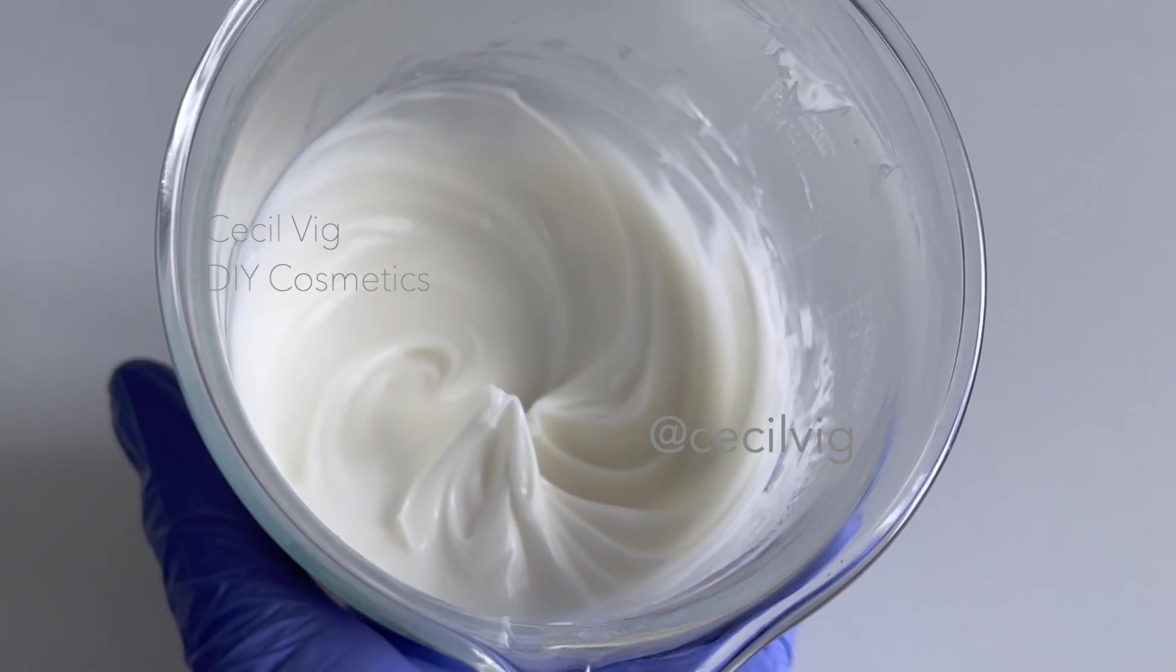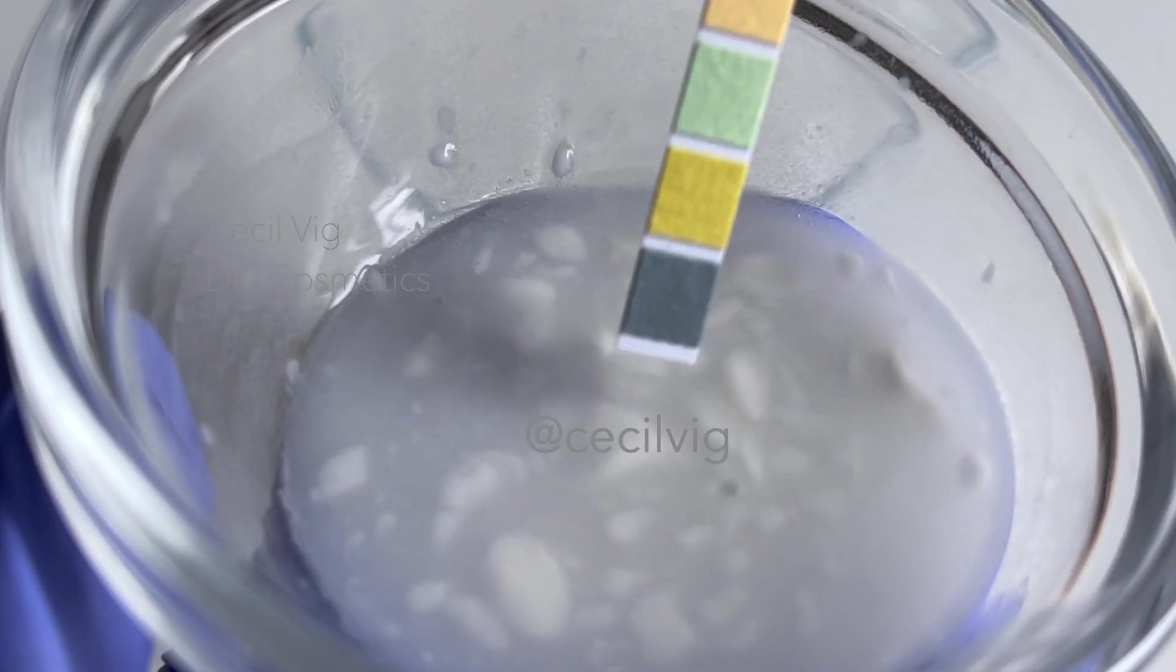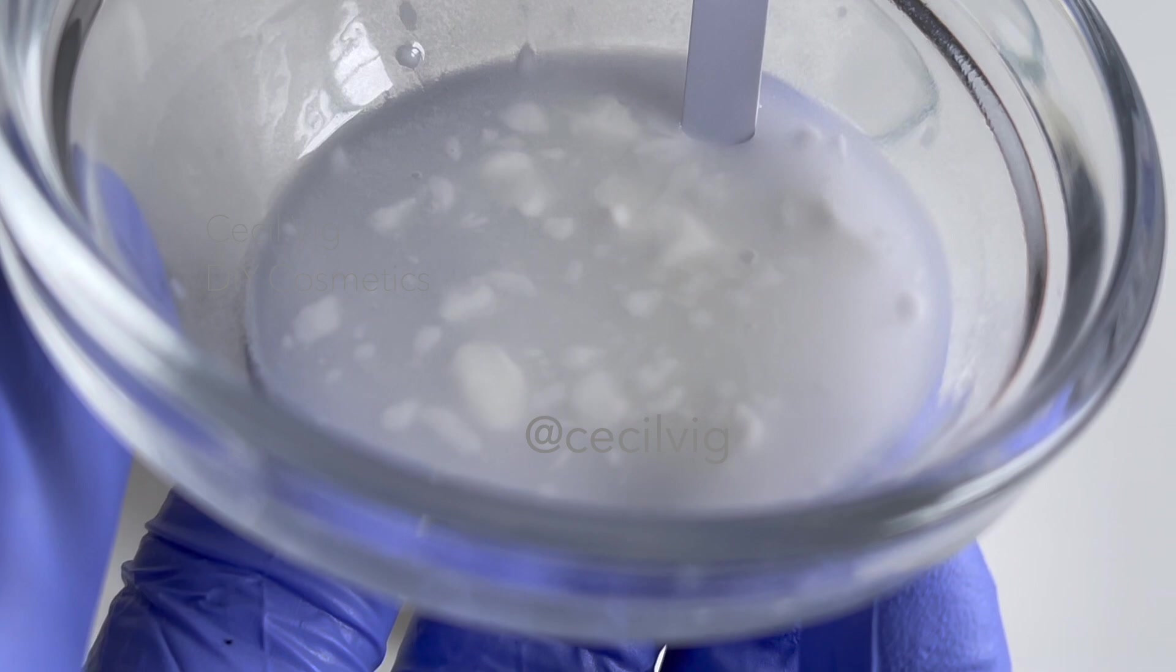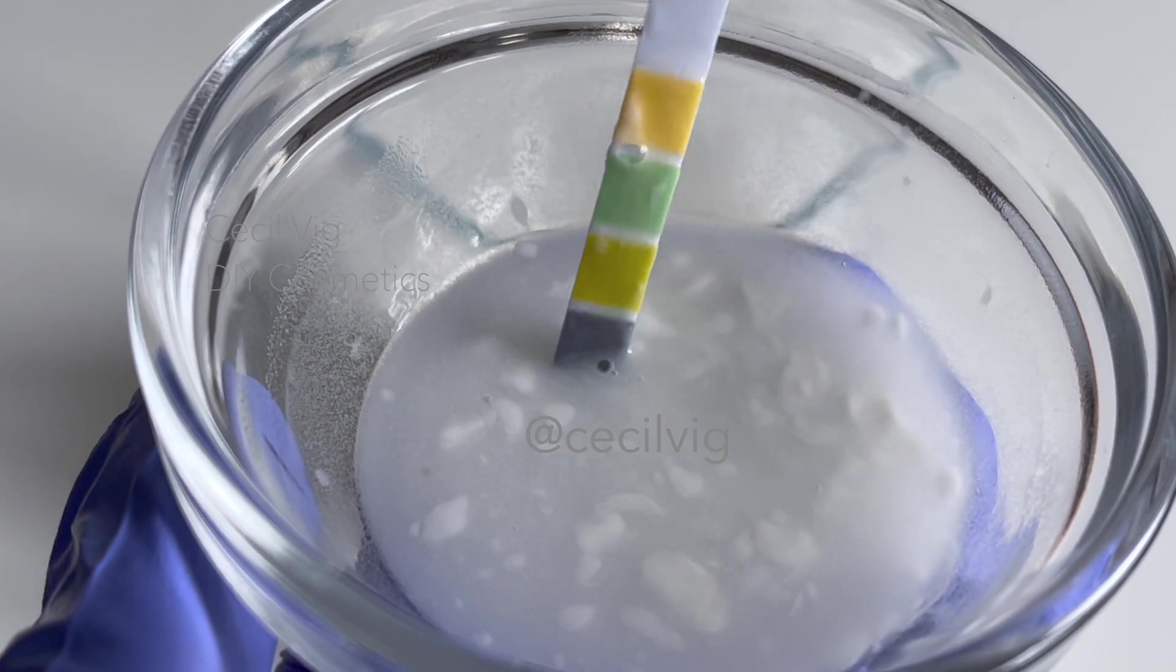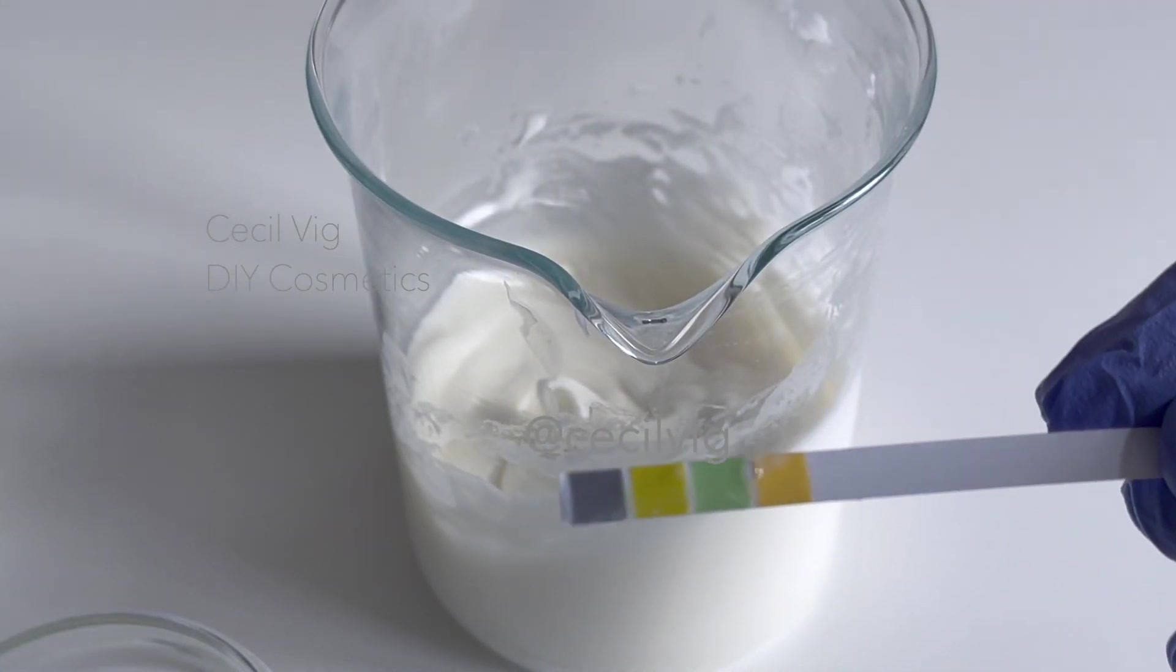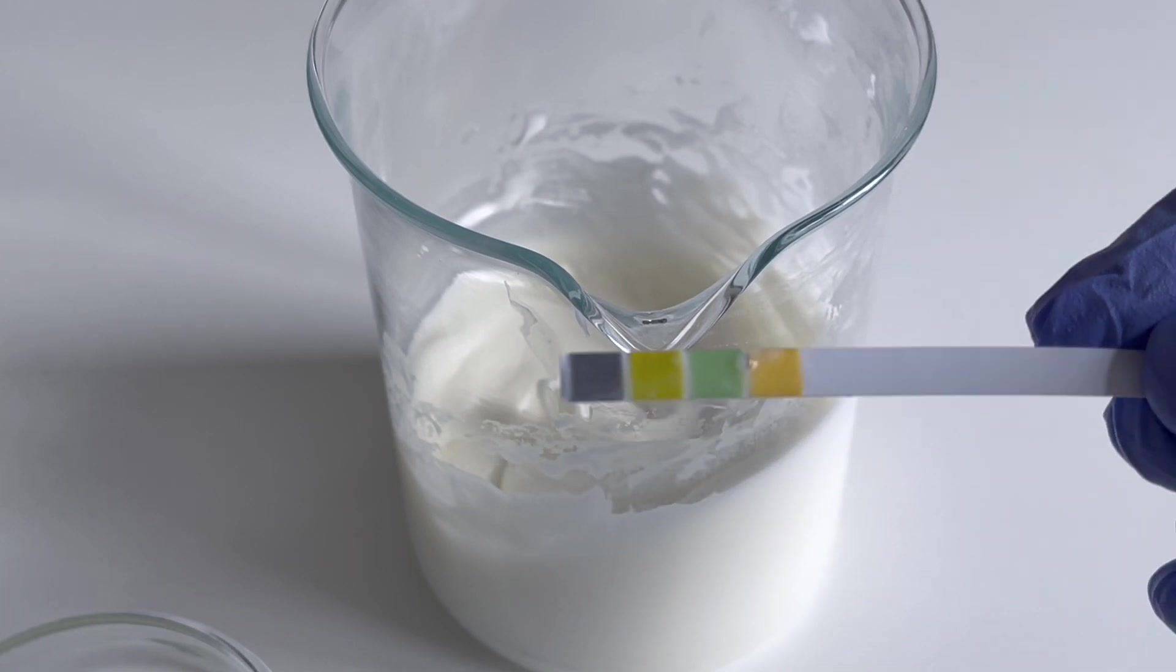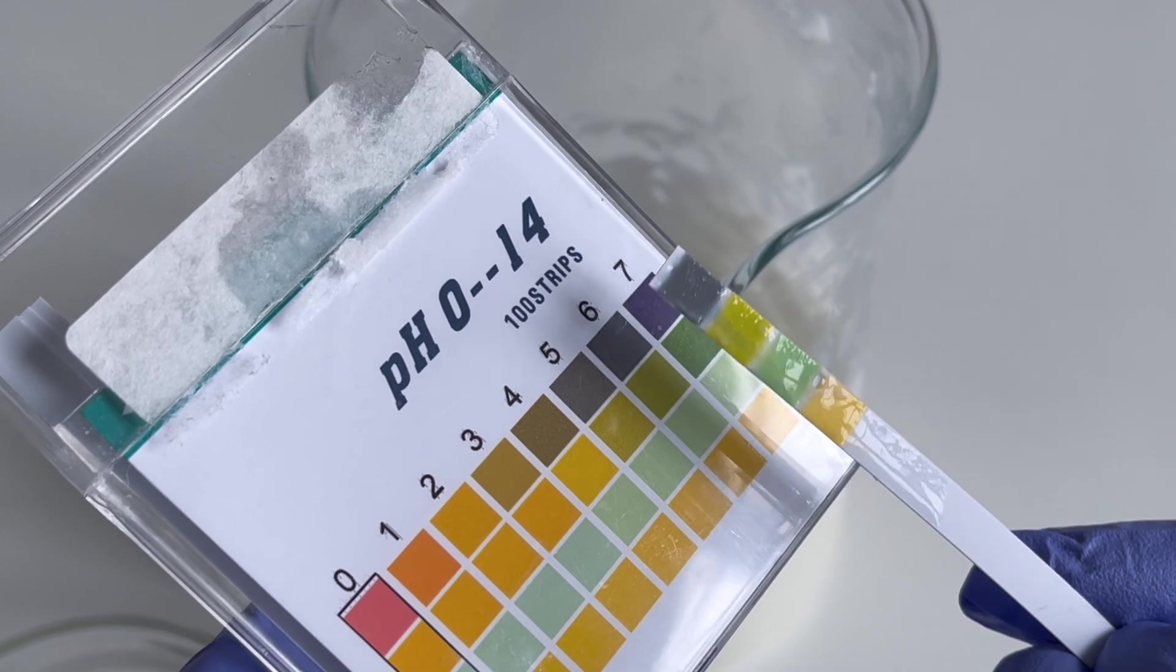The next step is to test the pH value. To do this, you mix 2 grams of the body butter with 8 grams distilled water. Then dip your pH strip into it for 10 seconds. Remove it and see where the pH value is at. We need to have a pH of around 5.5 and 6. As you can see, no adjustments are needed.